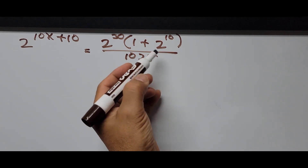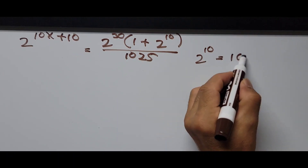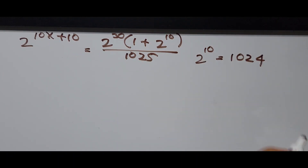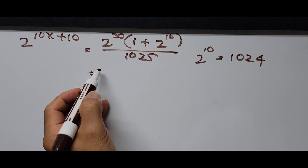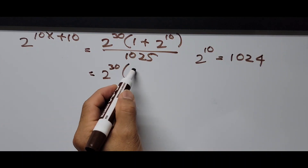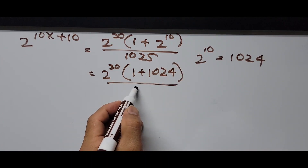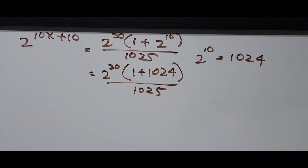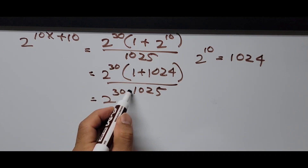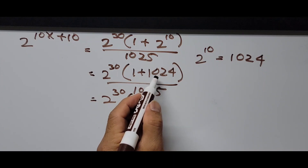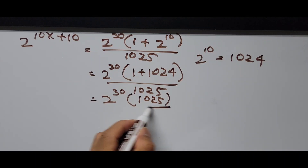Using our calculator, 2 raised to the 10th power is equal to 1024. So the numerator on the right side of the equation will be 2 raised to the 30th power times the quantity 1 plus 1024, all divided by 1025. Simplifying further, that is 2 raised to the 30th power times 1025, divided by 1025.